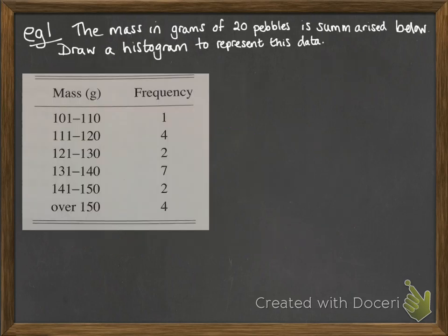Okay, and here's an example. We've got the mass in grams of 20 pebbles, and it's summarised below in this table. And we want to draw a histogram to represent this data.